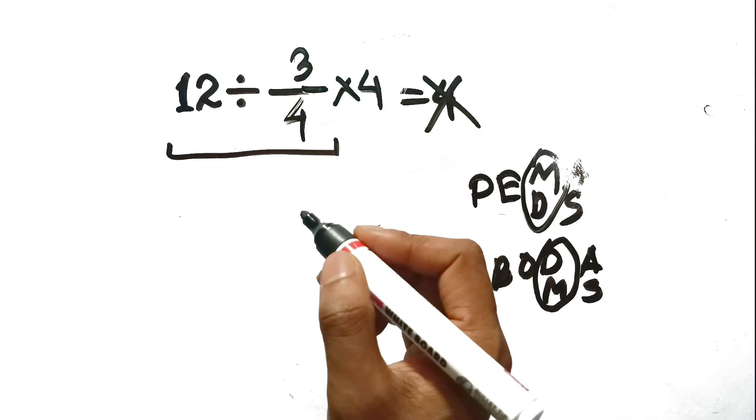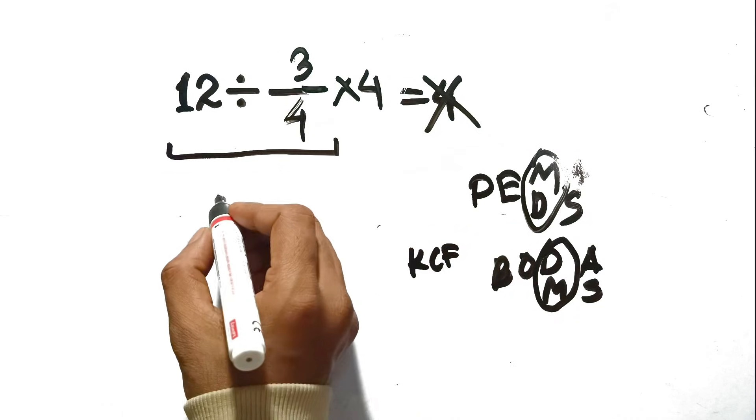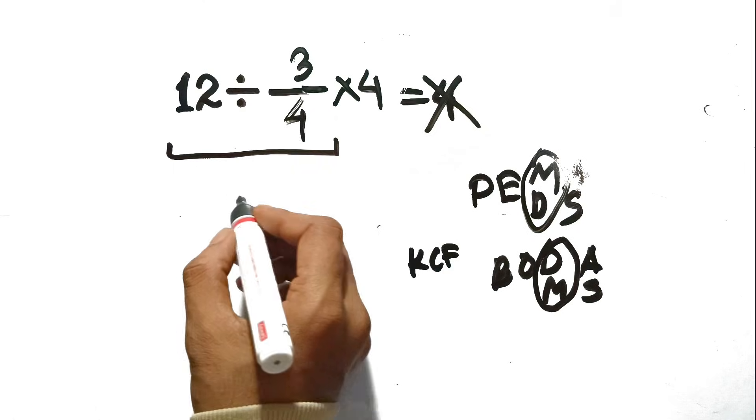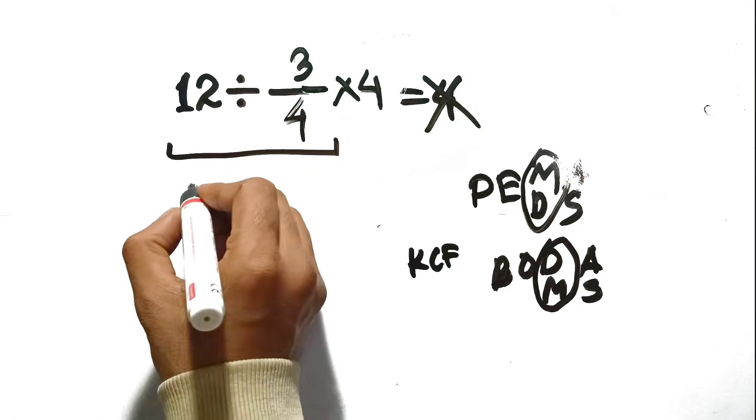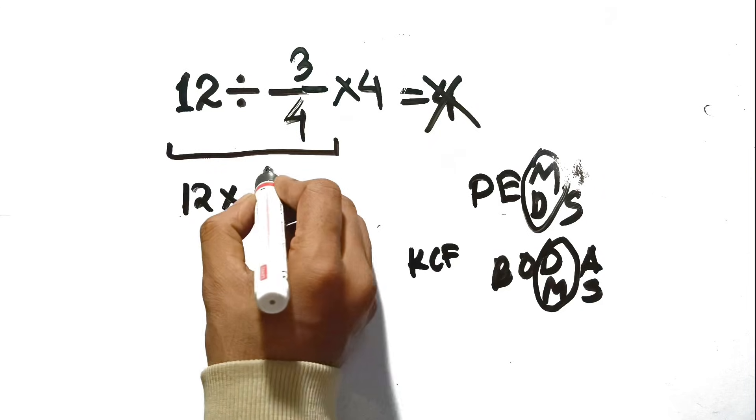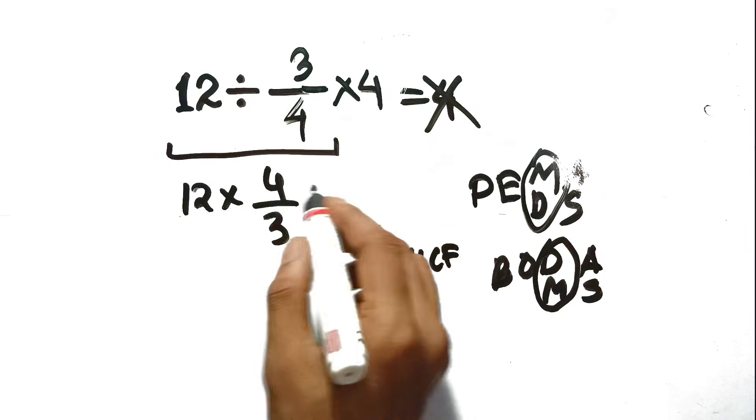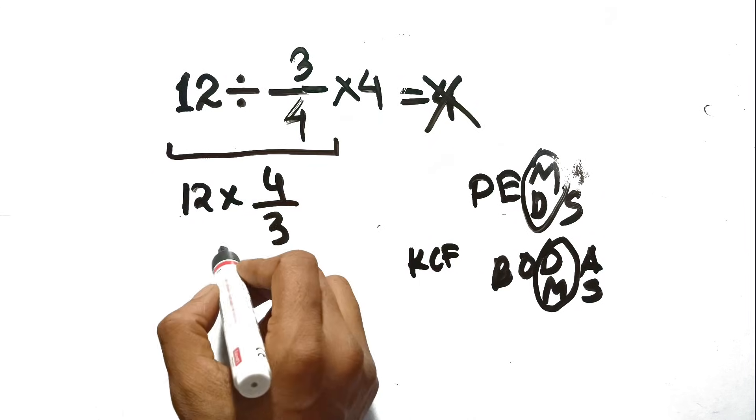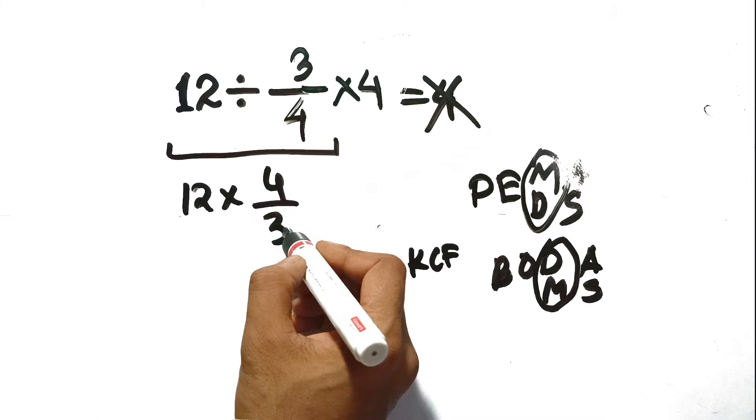We keep the 12, we change the division sign to a multiplication sign, and we flip the 3 fourths upside down to become 4 thirds. So now the problem is 12 times 4 thirds. Let's solve that. 12 times 4 is 48, then 48 divided by 3 is 16.